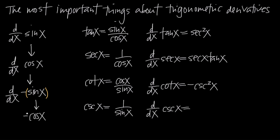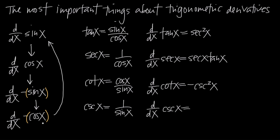Same thing here: we recognize we have negative times cosine of x. The derivative of cosine of x is negative sine of x, so the derivative of negative cosine of x gives us negative times negative sine of x, which is positive sine of x. So the sequence repeats: derivative of sine is cosine, cosine gives negative sine, negative sine gives negative cosine, and negative cosine takes you back to positive sine.